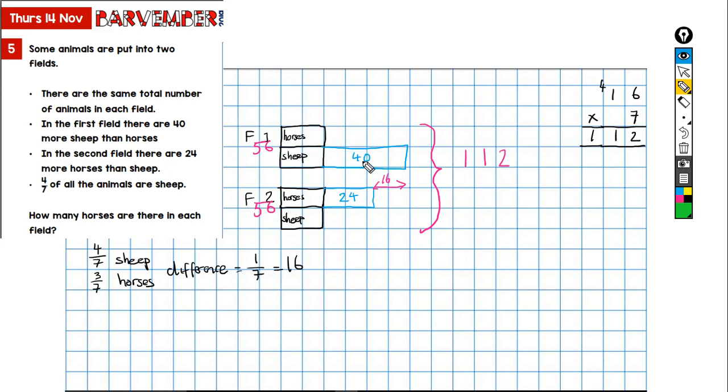So 56 take away 40 is 16. If I divide 16 by 2 that gives me 8. So there must be 8 horses here, 8 sheep here, 40 sheep here. So that's good.